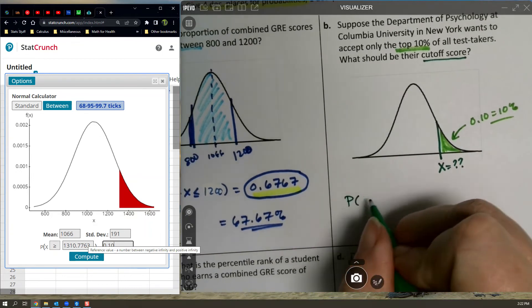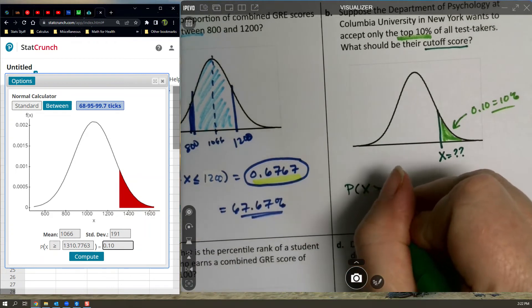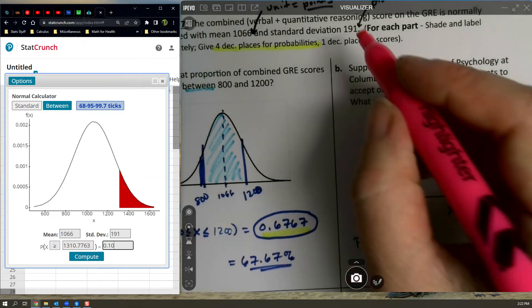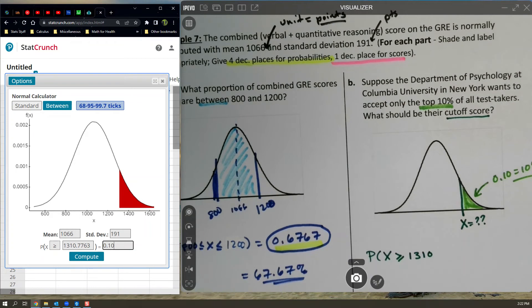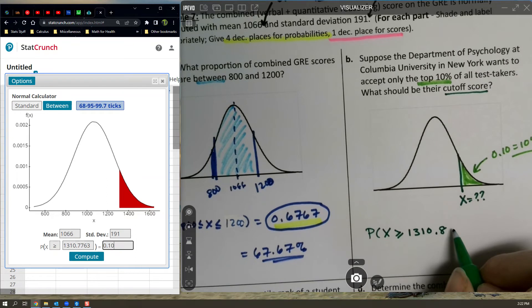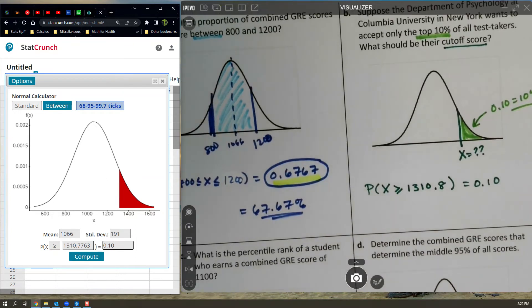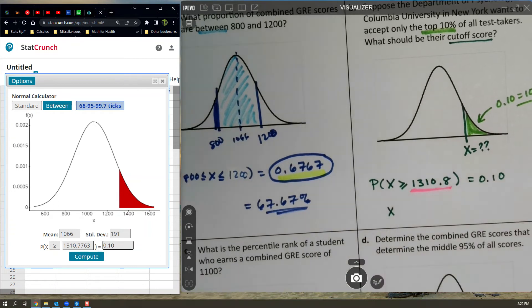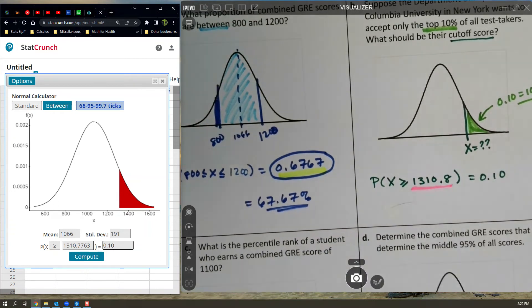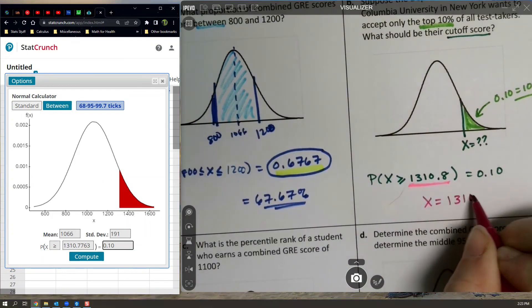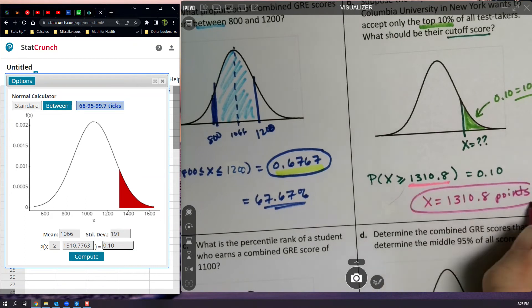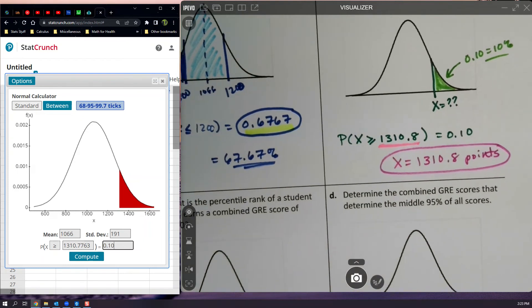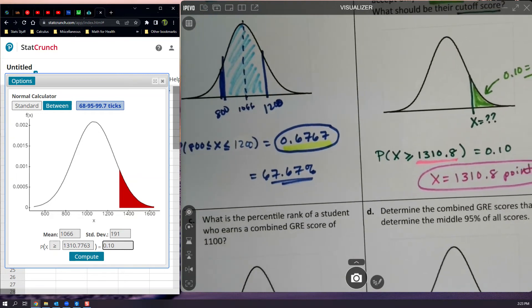There you have it. So the value is actually inside that parentheses. X is greater than or equal to 1310.8. Now they said for these ones, one decimal place for the scores. So we're only going to do one decimal place. So 1310.8 equals 0.10. The 0.10 is not the answer. We knew that to start with. What we wanted was this score right here. So the score is 1310.8 points. It has a unit.